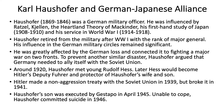To prevent another similar disaster, Haushofer argued that Germany needed to ally itself with the Soviet Union. And for a while, between 1939 and 1941, this is pretty much what happened — Germany and the Soviet Union allied against Poland. Germany invaded Poland on September 1st from the West, and then the Soviet Union on September 17th, 1939 invaded it from the East. Poland was thus carved up and ceased to exist. The German-Soviet Non-Aggression Pact lasted for two years, when Germany finally broke it in June of 1941.